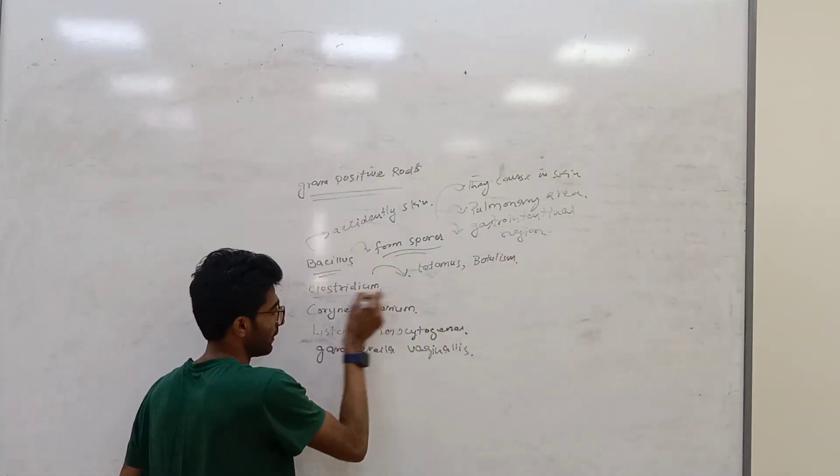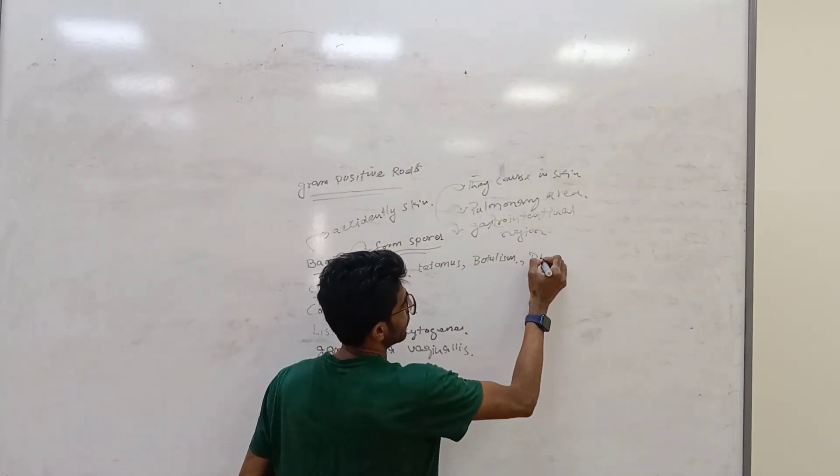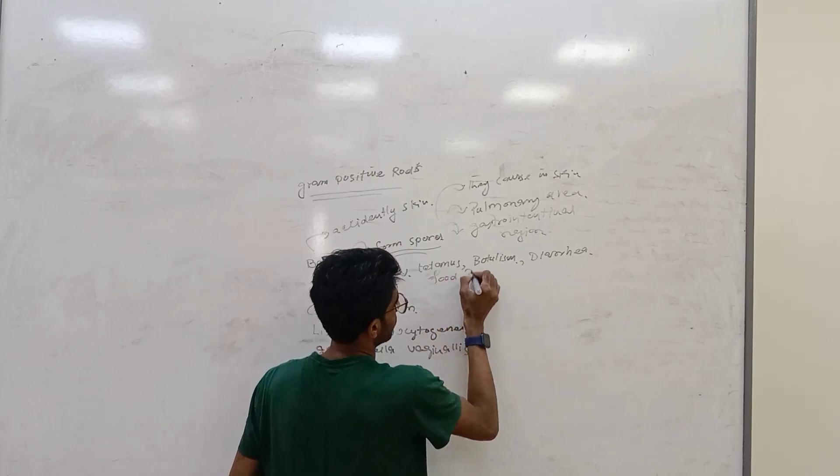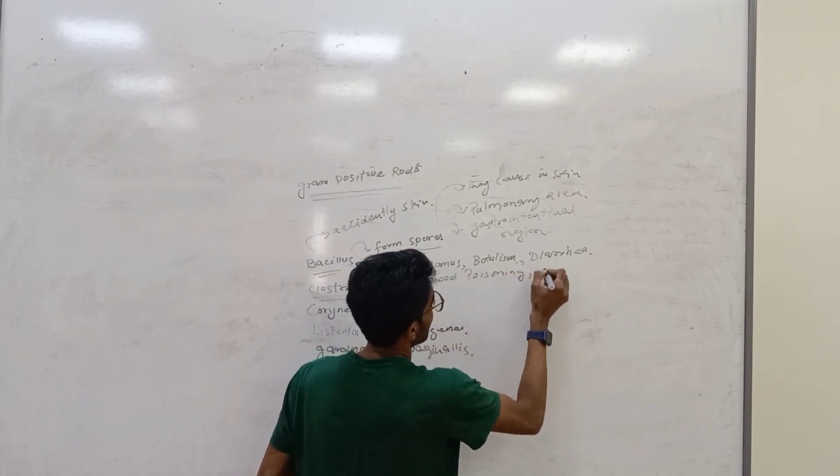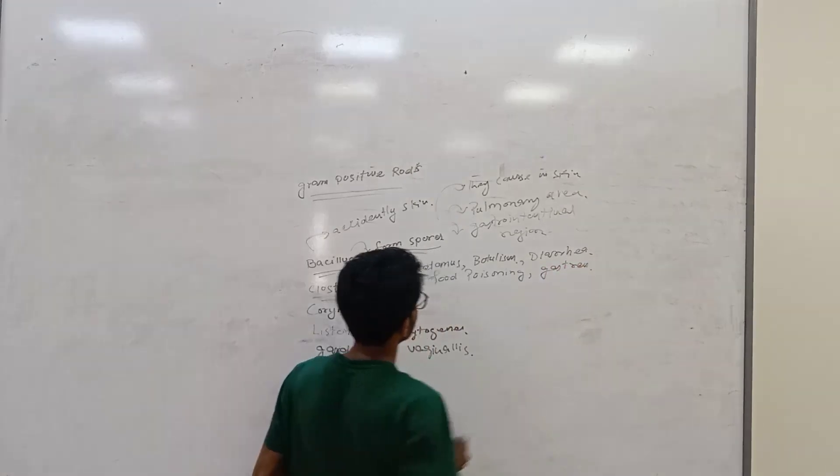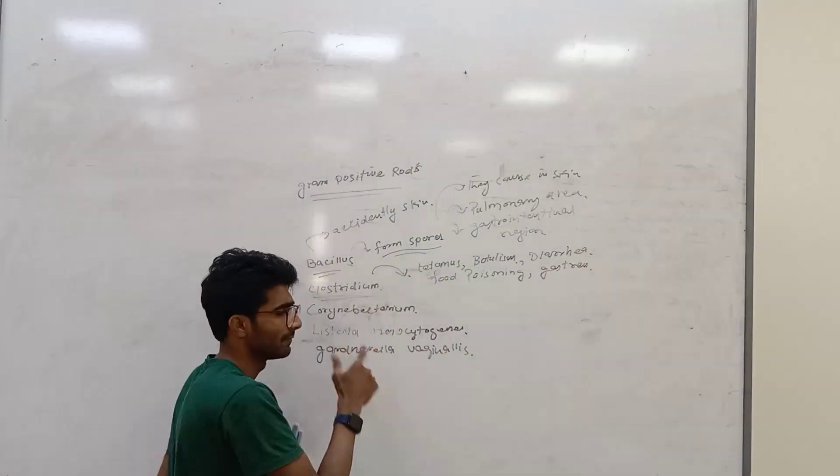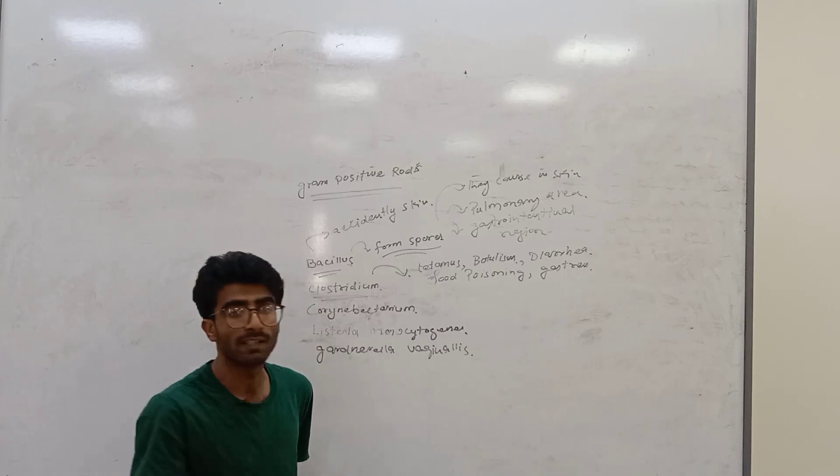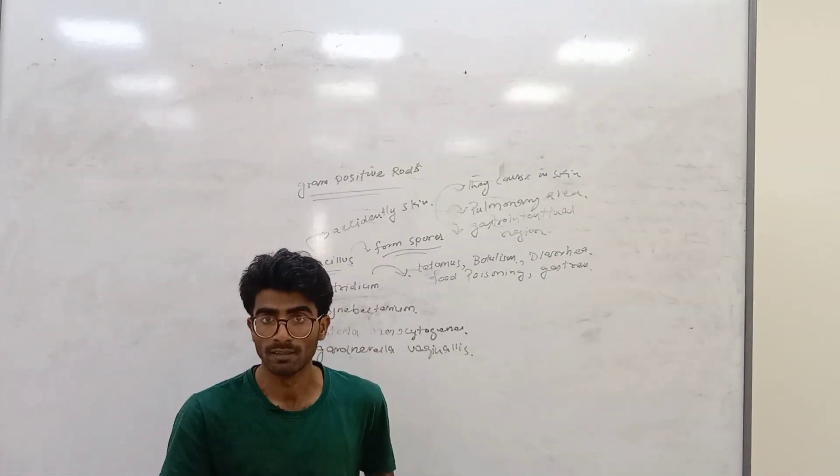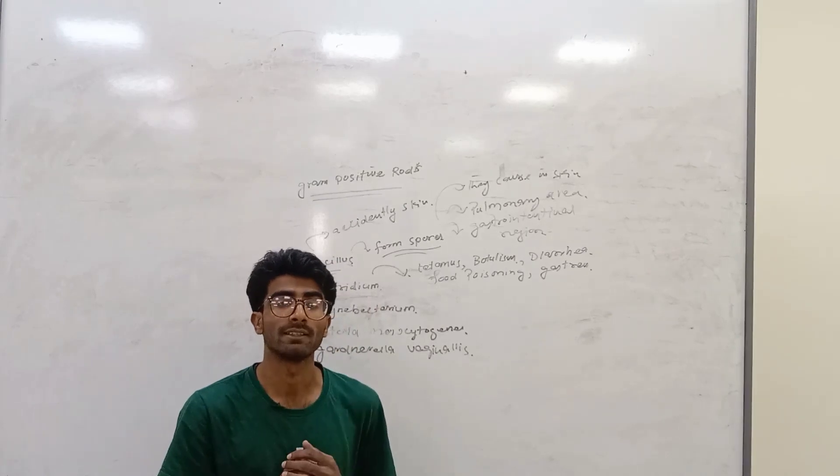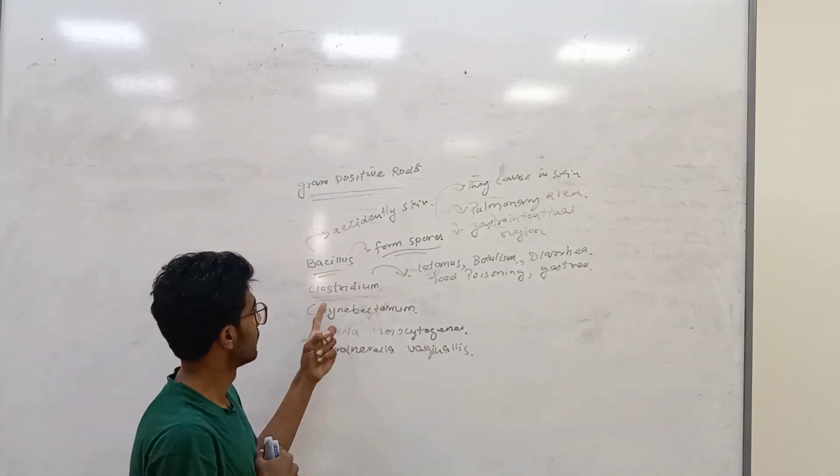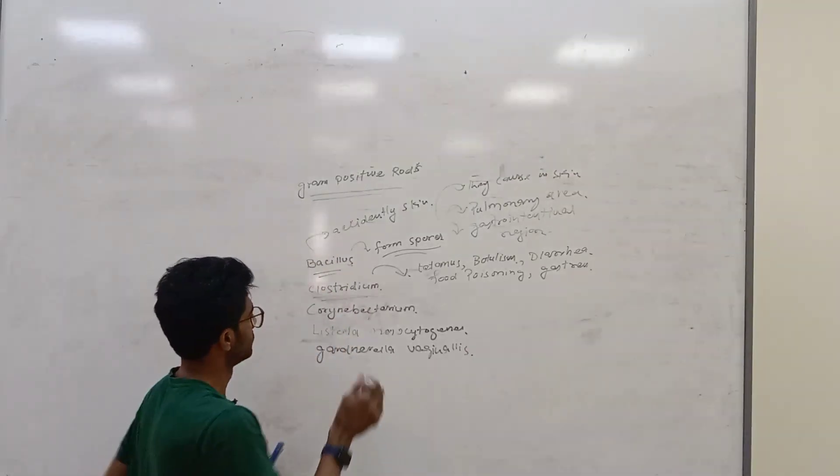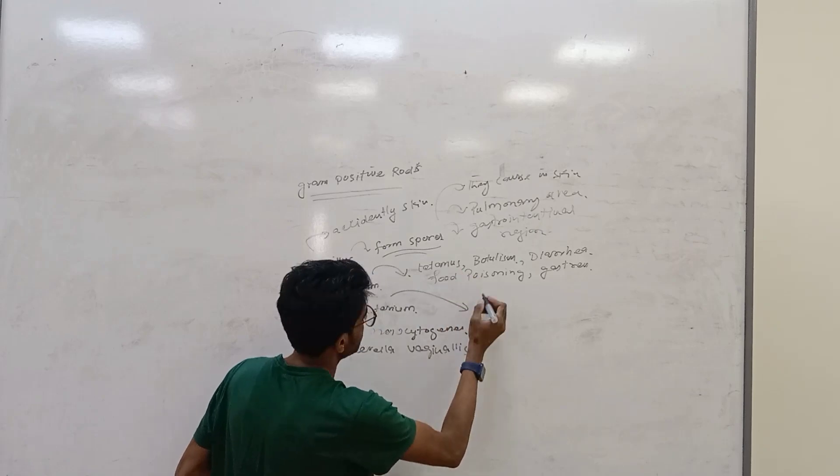Clostridium bacteria are divided into different categories. One category is known as Clostridium tetani. The other category is Clostridium botulinum that causes botulism. We can treat Clostridium with the help of penicillin.